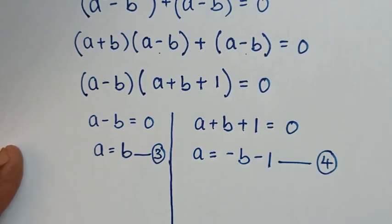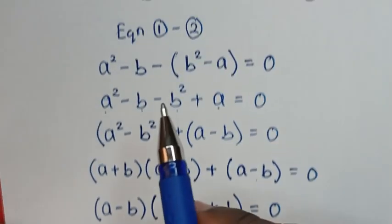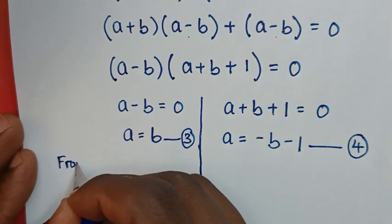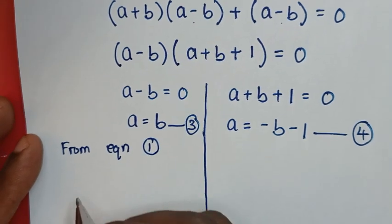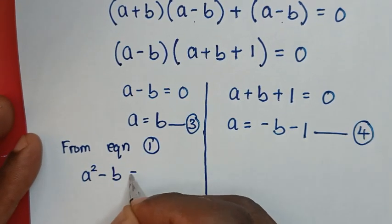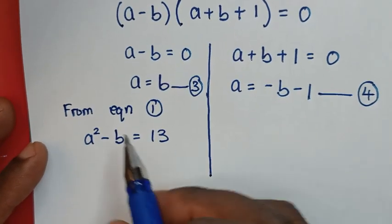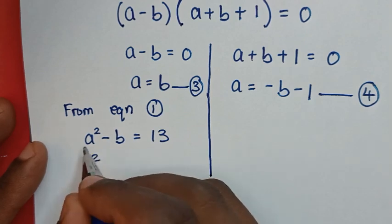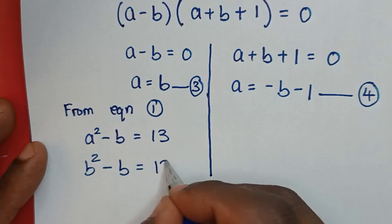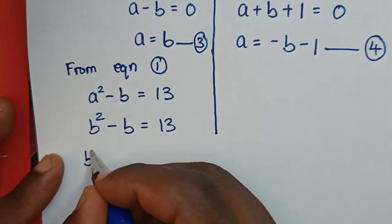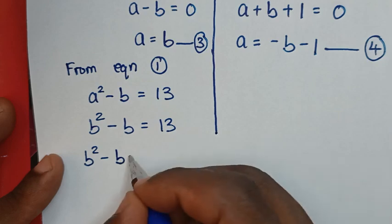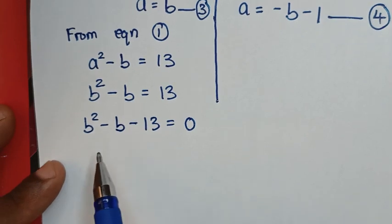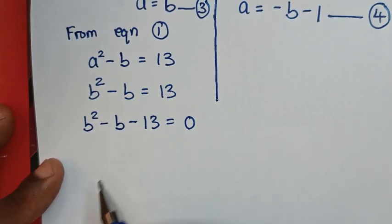In the next step we'll use equation 1, which is a squared minus b is equal to 13. Substituting equation 3 where a is equal to b, we get b squared minus b is equal to 13. Rearranging gives b squared minus b minus 13 is equal to 0. We'll solve this quadratic equation using the quadratic formula.